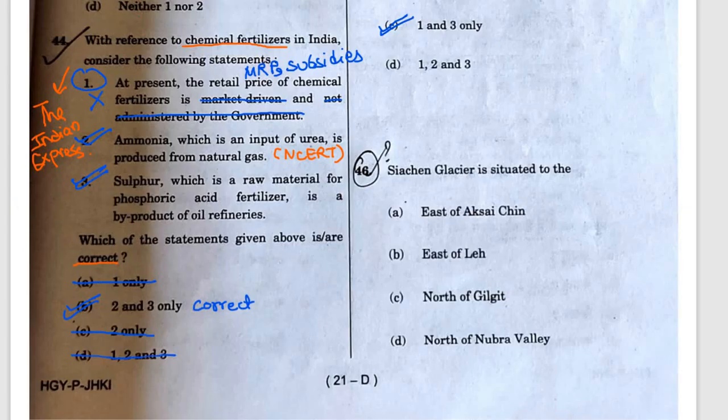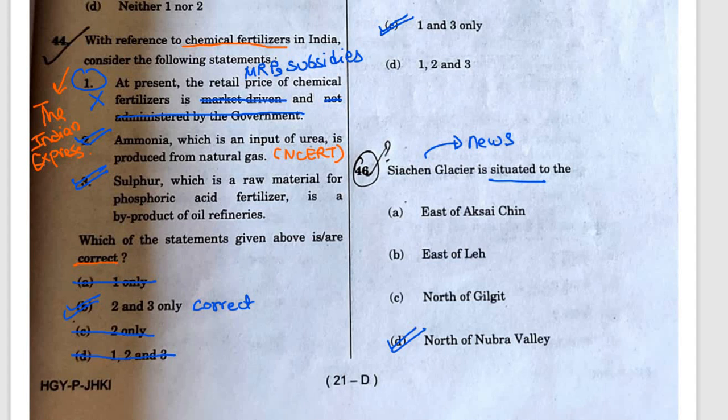Question 46: Siachen Glacier is always in the news. The options are: east of Aksai Chin, east of a lake, north of Diljit, or north of Nubra Valley. The correct answer is D — north of Nubra Valley. Very easy question.